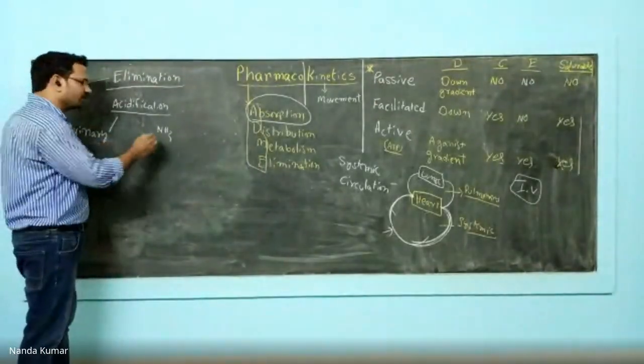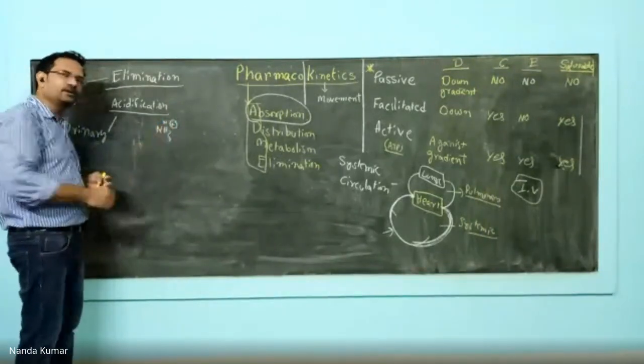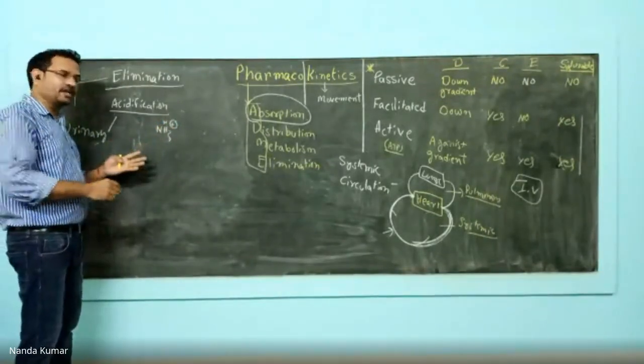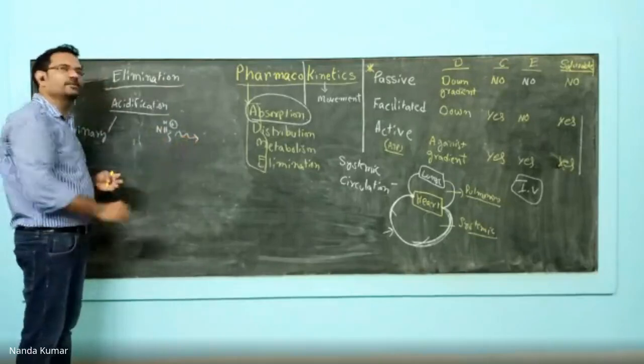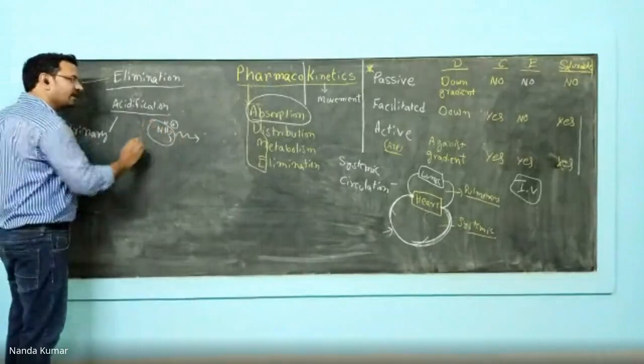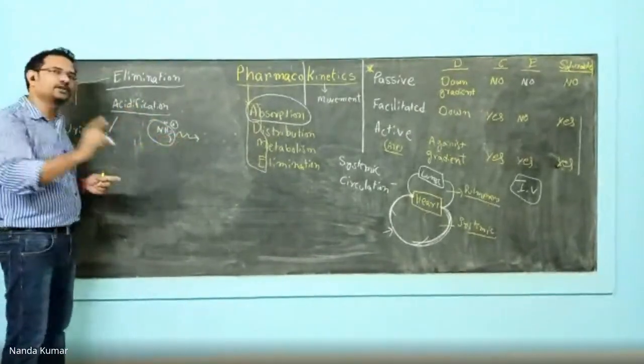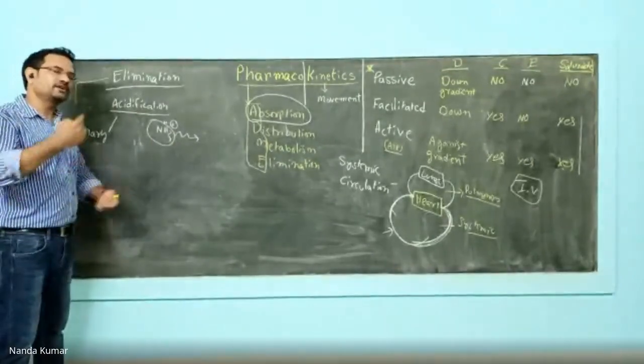It gets converted to ionized form. If it is ionized form, elimination becomes easier. The logic in urinary acidification: it enables basic drug elimination because basic drugs in presence of acid get converted to ionic form, and ionic drugs get eliminated.